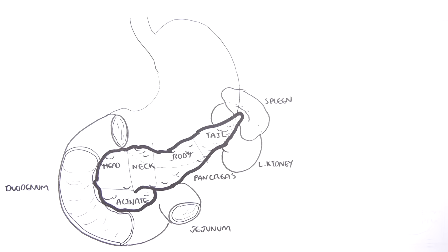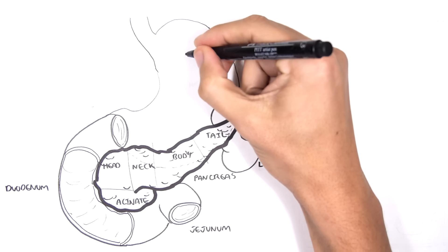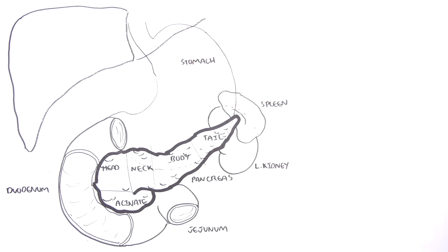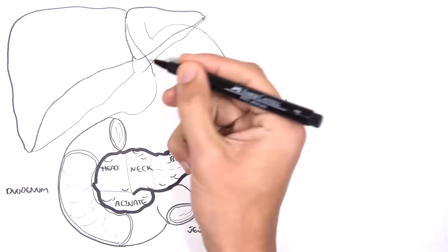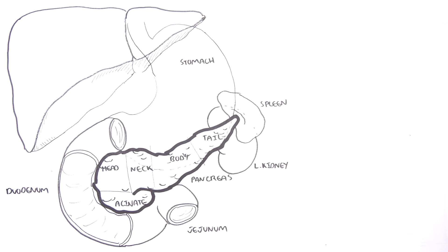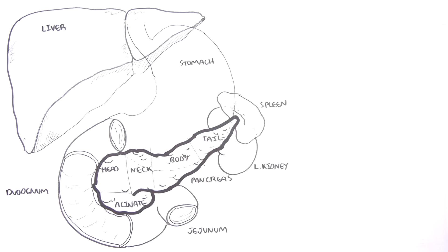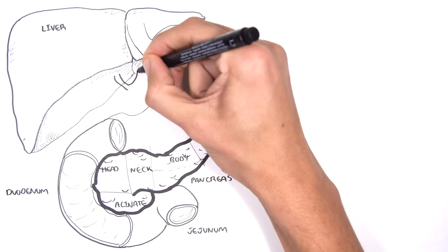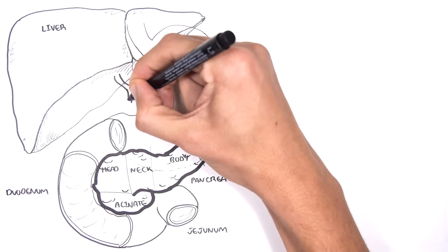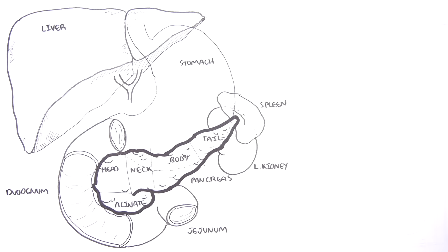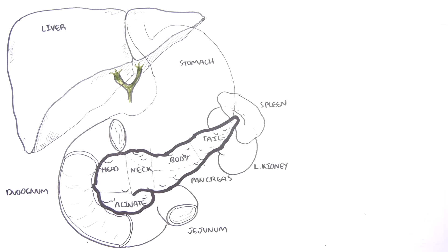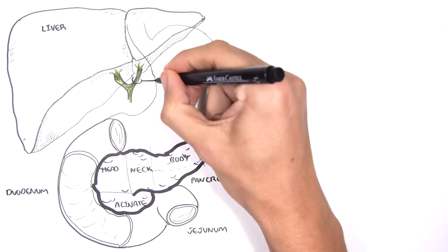Sitting anterior and superior to the pancreas is the stomach, which joins to the duodenum. The liver lies in the right upper quadrant of the abdomen and is the source of bile production.